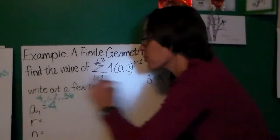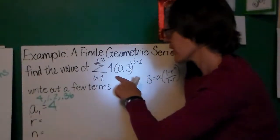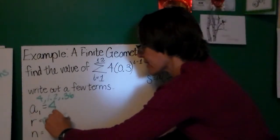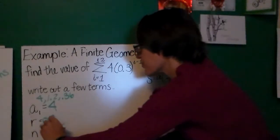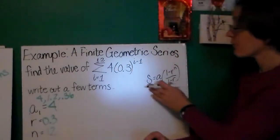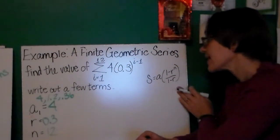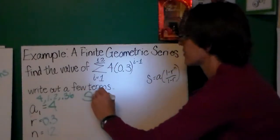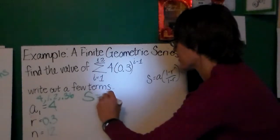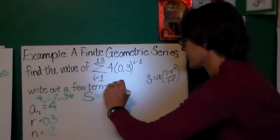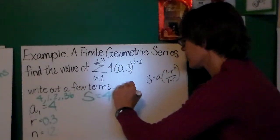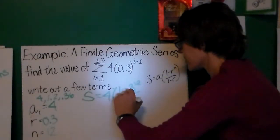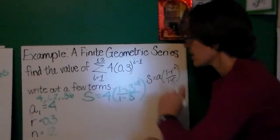So let's fill in a_1, r, and n. a_1 is 4, r is given here, 0.3, and n is 12. I've written my summation formula here just for ease of use. So my sum, which I'll write the English letter s, 4, 1 minus 0.3 to the 12th power, divided by 1 minus 0.3.